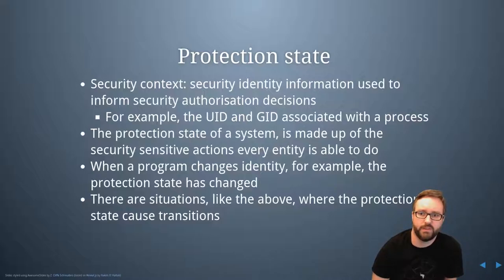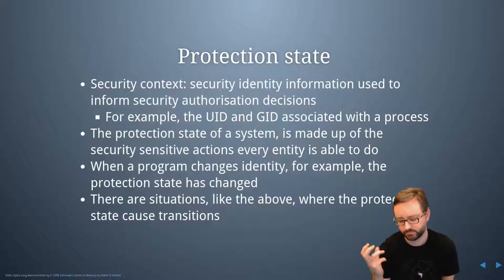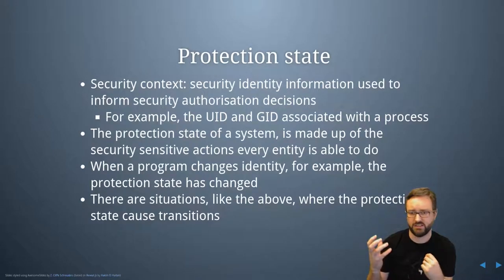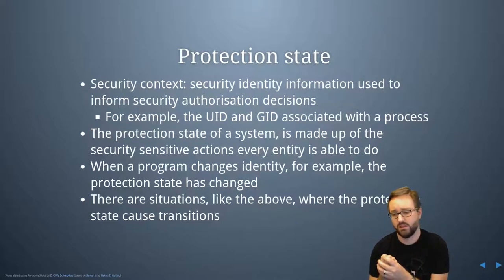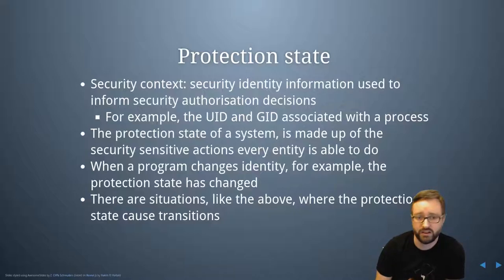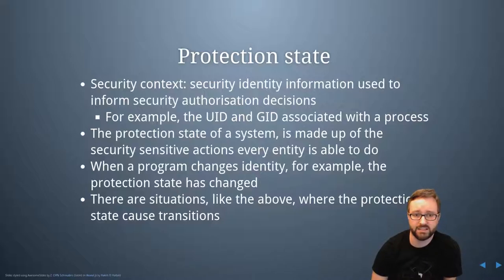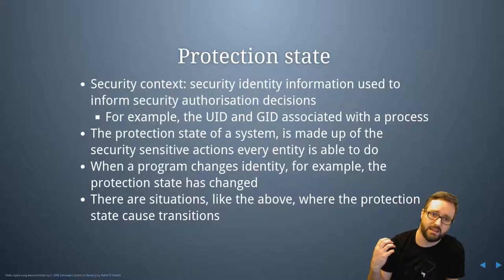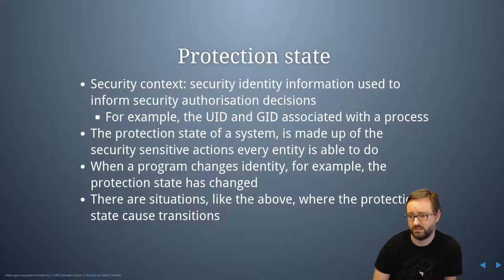On a computer system you've got all these different processes running — all the different programs that have been started, that are in memory and being processed. Each of those processes has information attached to them, and one important piece is the security context: all the information attached to the process that's used to make security decisions. On a Linux system, that's primarily the UID (user ID) and GID (group ID) attached to the process. On a Windows system, it's the SID — a security identity — that is attached to each process.